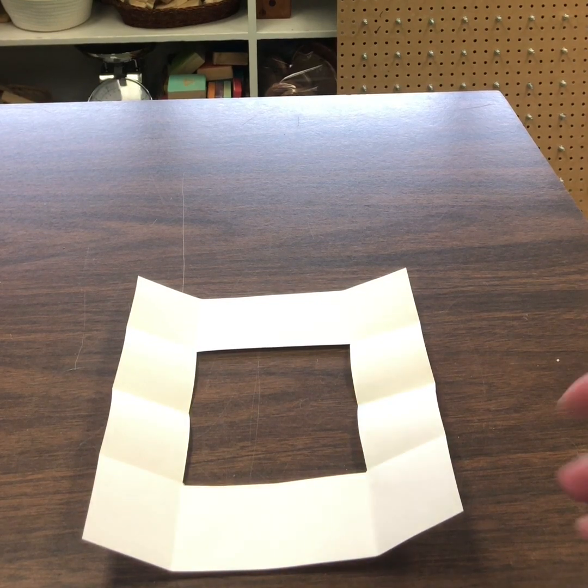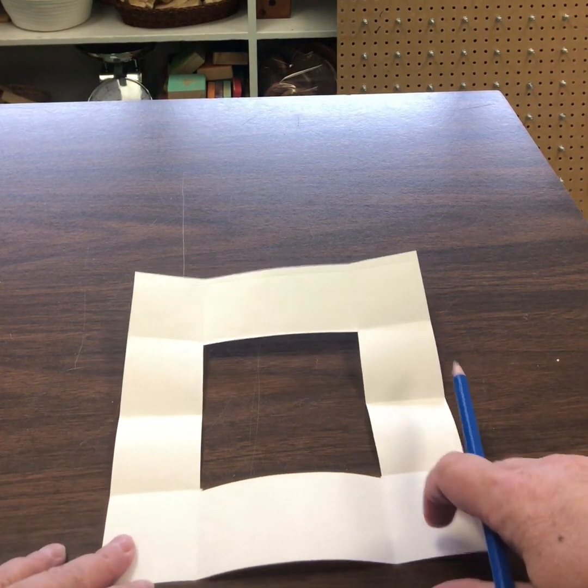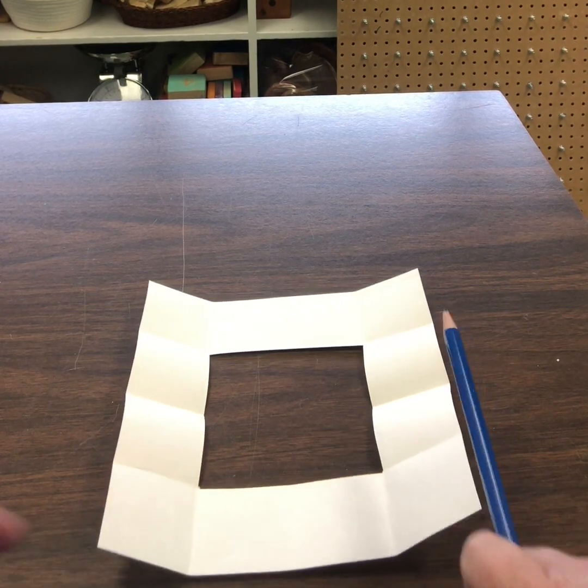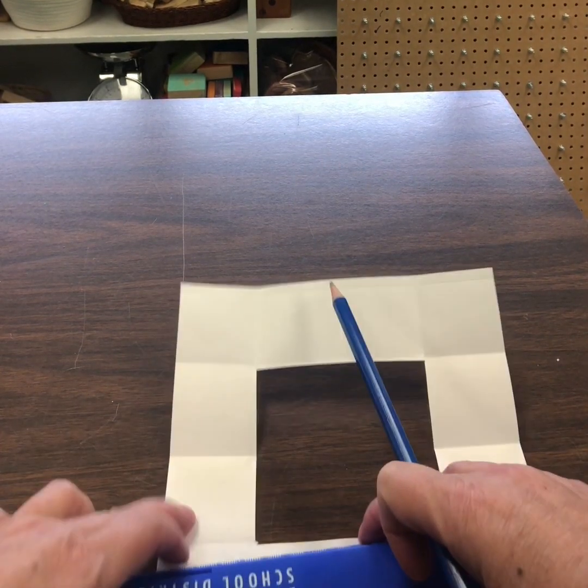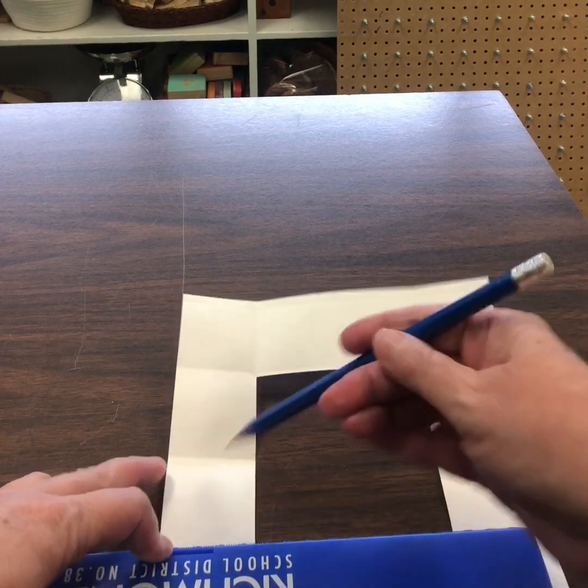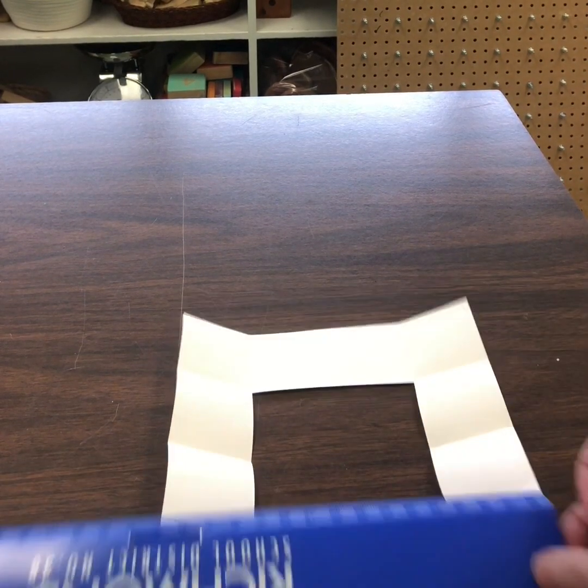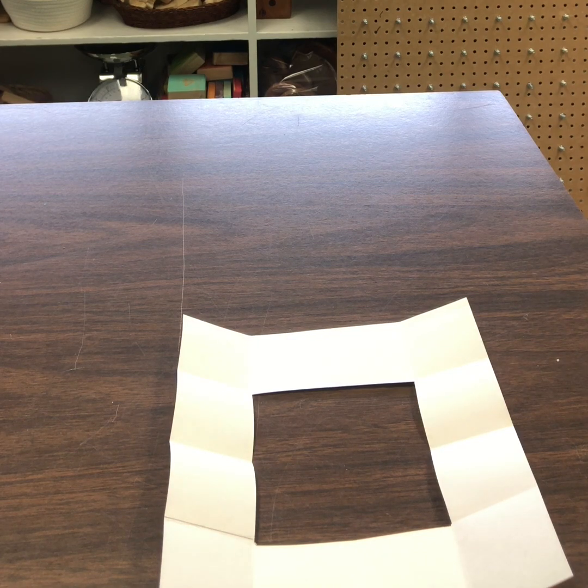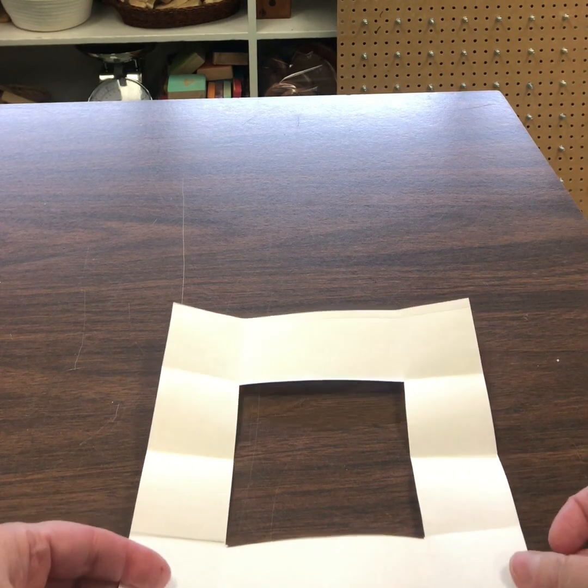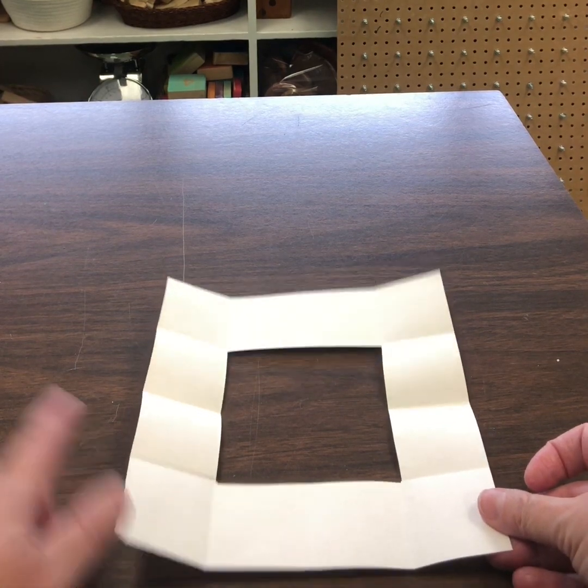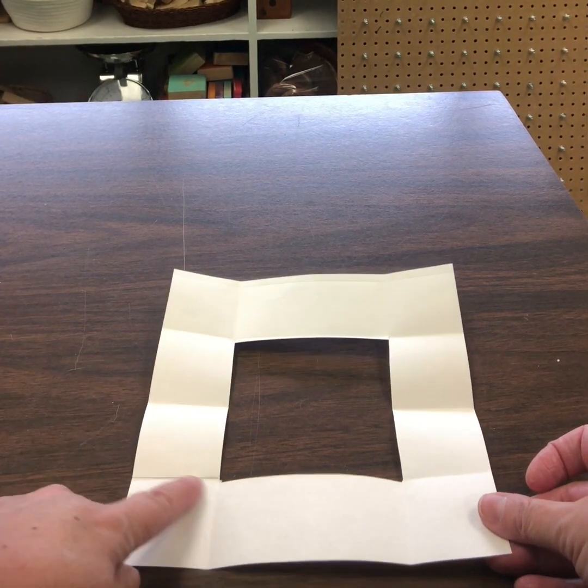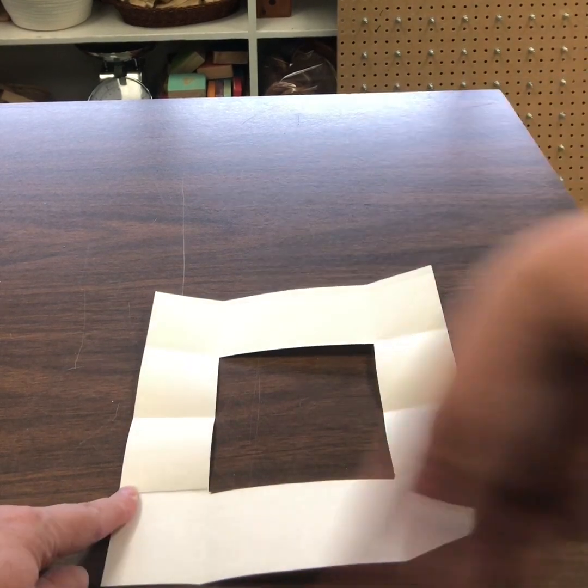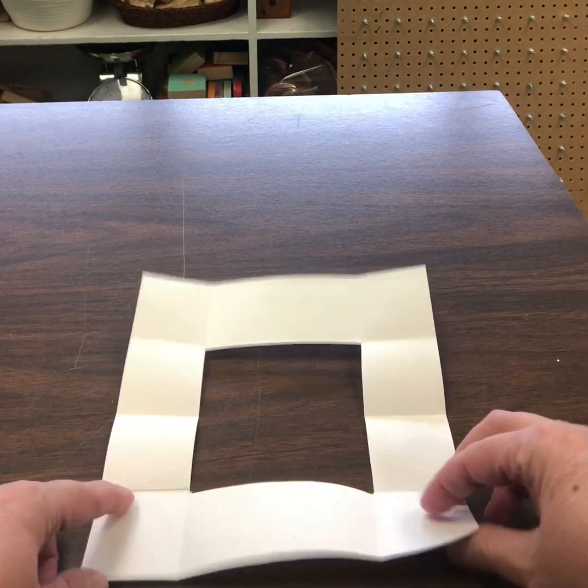So one tip before we fold, which will help us later, is we're just going to draw a line along this fold right there. I can use my ruler or you can just sort of visualize and estimate it. But just so we remember that that's the fold that we're going to have to do a kind of a special move, paper folding move with. Okay? So that's on my bottom left here on top of that square.